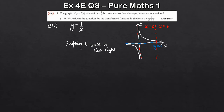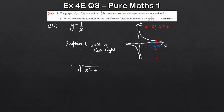Remember: translating four units to the right means writing x−4 in the denominator. If it were two units to the left, it'd be x+2. So the transformed function is y=1/(x−4). That's three marks and nothing too bad.